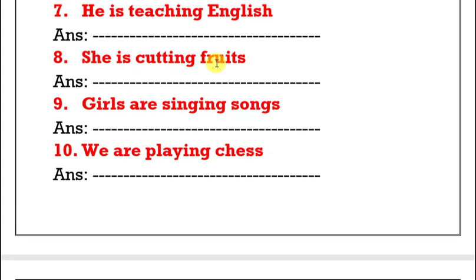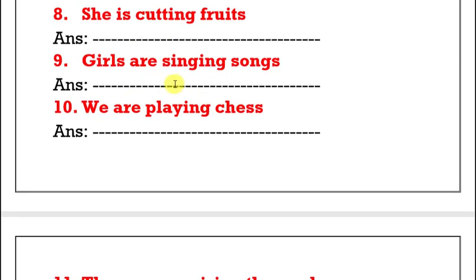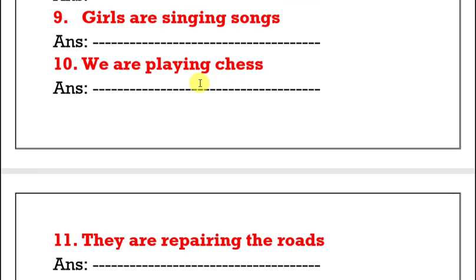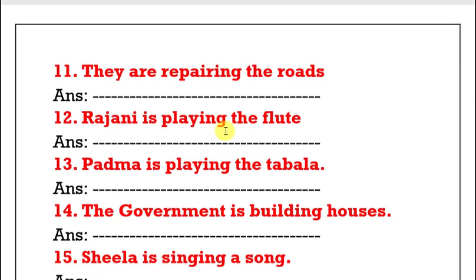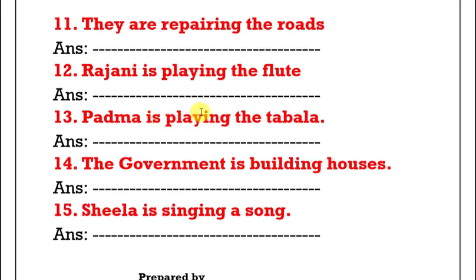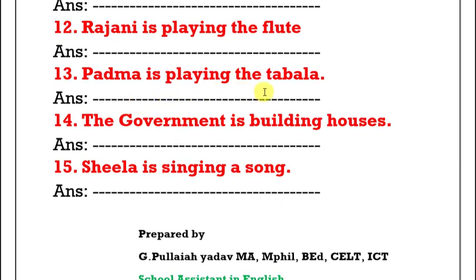Eighth: 'She is cutting fruits.' Fruits is plural, so: 'Fruits are being cut by her.' The V3 form of cut is cut — all three forms are the same. Ninth: 'Girls are singing songs.' Answer: 'Songs are being sung by girls.' Tenth: 'We are playing chess.' Answer: 'Chess is being played by us.' Eleventh: 'They are repairing the roads.' Answer: 'Roads are being repaired by them.' Twelfth: 'Rajini is playing the flute.' Answer: 'The flute is being played by Rajini.' Thirteenth: 'Padma is playing the tabla.' Answer: 'The tabla is being played by Padma.'